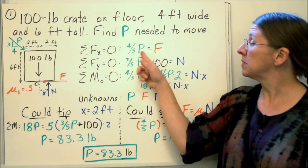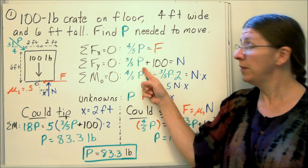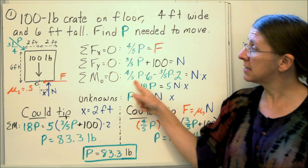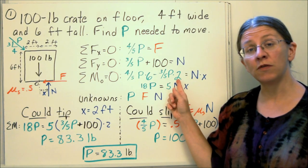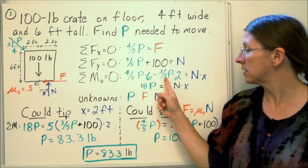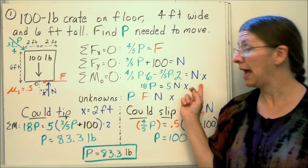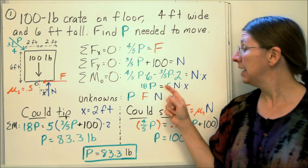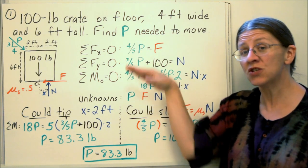So my equations of equilibrium say four-fifths of p is f, that's the x component. Three-fifths of p plus 100 equals n. And four-fifths of p, that's the x component, the moment arm is 6. Three-fifths of p times the moment arm of 2, those are in opposite directions when I'm taking the sum of the moments about that point. So I'll have one of them positive, the other one negative. And those have to be balanced by n acting at whatever distance x it is. So if I simplify that equation, I have 18p equals 5 times nx.